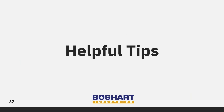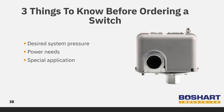Now we will look at some helpful tips. Here are three things to know before ordering a switch. First, you need to know your desired system pressure — this covers the cut-in, the cut-out, and the differential. Second, you need to know your power needs; look at the pump for what sort of power is going to go through the switch. Third, you need to know if you need a special application switch, like a low-pressure cut-off switch, for example.